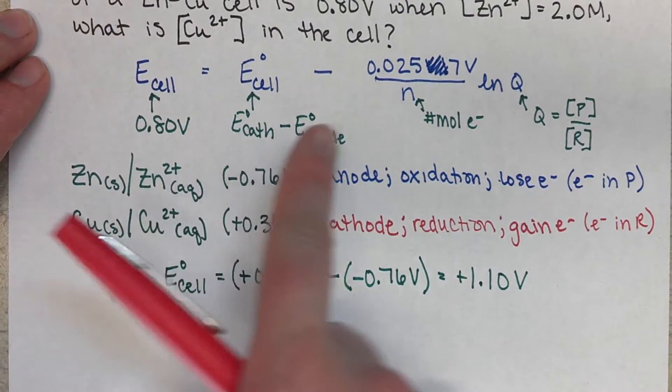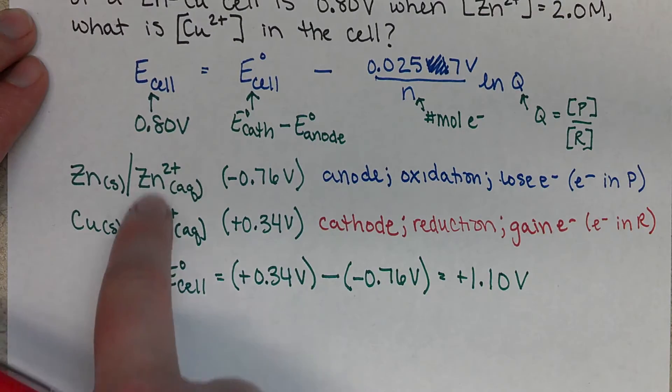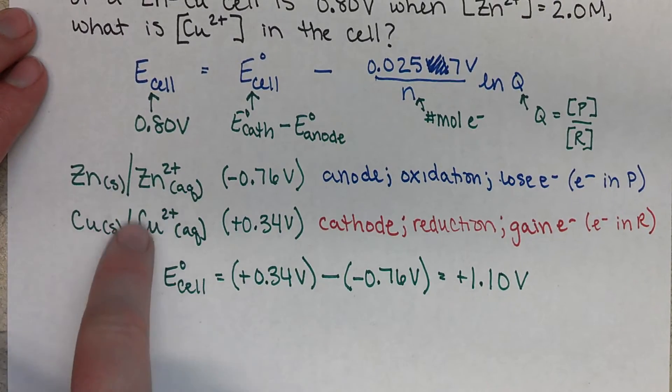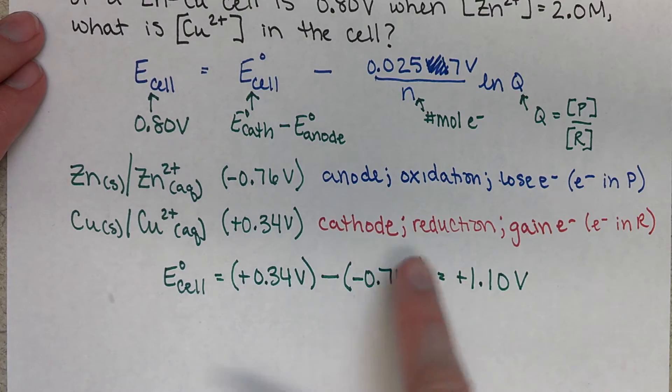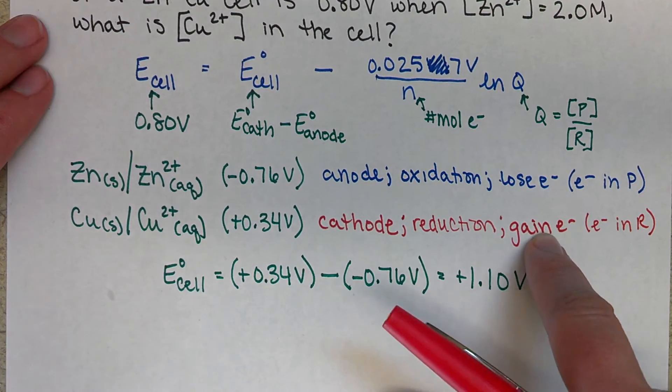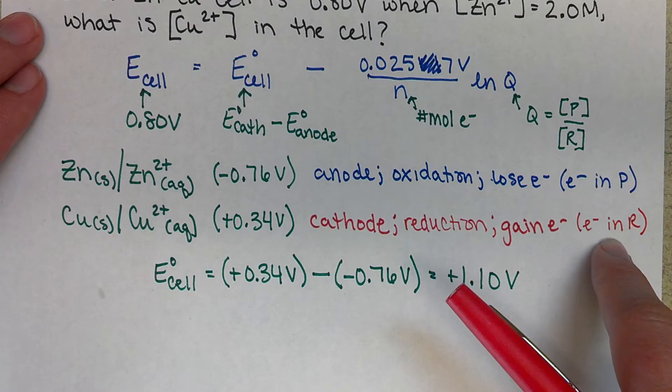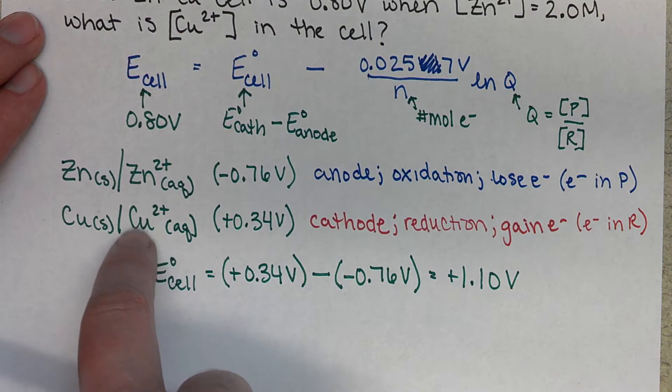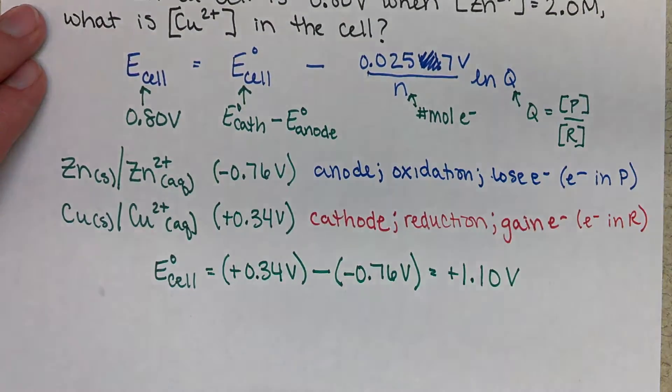Now to figure out our N, we want to write our half-reactions for our two half-cells. So for our cathode, we're going to gain electrons. Our electrons have to be in our reactants. So we're going to start with the copper two plus ion.